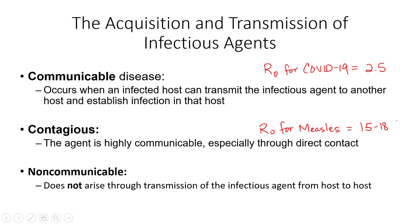Measles would be considered highly contagious, which is why anytime somebody with measles enters a population of unvaccinated people, or children too young to be vaccinated, it becomes a real concern. We can get exponential growth going very fast for measles outbreaks.